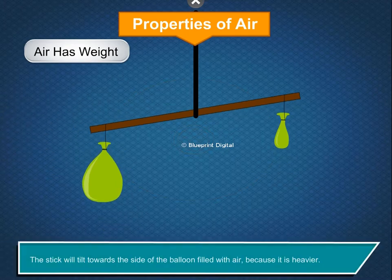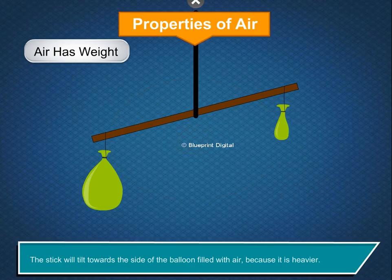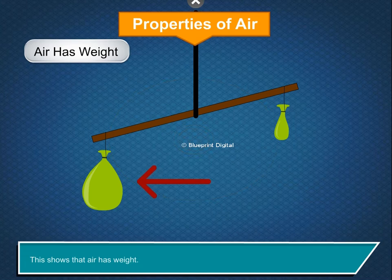The stick will tilt towards the side of the balloon filled with air because it is heavier. This shows that air has weight.